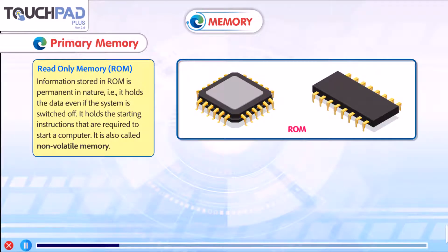Now we will talk about Read-Only Memory. Information stored in ROM is permanent in nature. It holds the data even if the system is switched off. It holds the starting instructions that are required to start a computer.